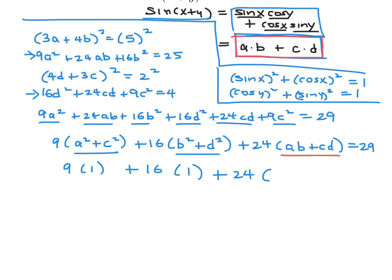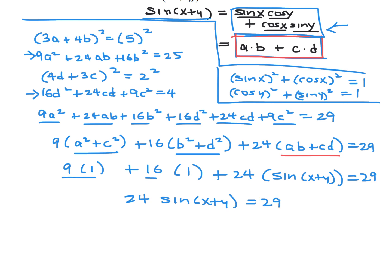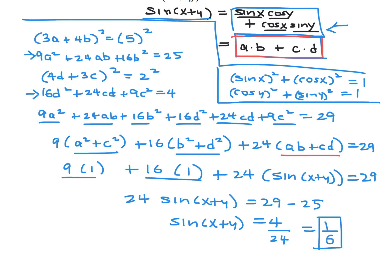Since ab + cd = sin(x + y), we get 24 sin(x + y) = 29 − 9 − 16 = 4, so sin(x + y) = 4/24 = 1/6. The answer is 1/6.